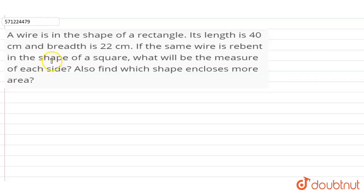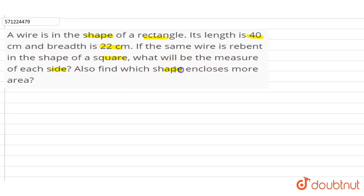Hi students, in this question we have given that there is a wire in the shape of a rectangle. Its length is given 40 cm and its breadth is given 22 cm. If the same wire is rebent in the shape of a square, what will be the measure of each side? Also find which shape encloses more area.